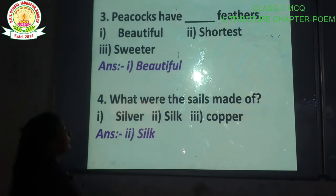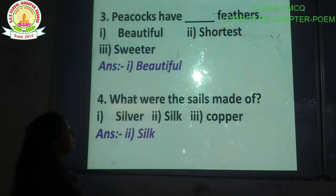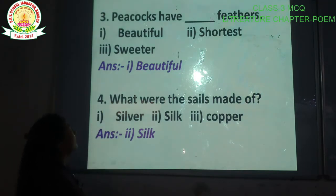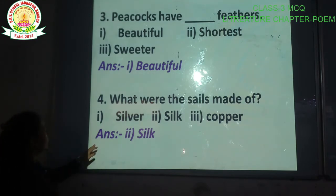Question number 3: Peacocks have dash feathers. Options are: beautiful feathers, shortest feathers, sweeter feathers. The correct answer is option number 1 — beautiful. Peacocks have beautiful feathers.